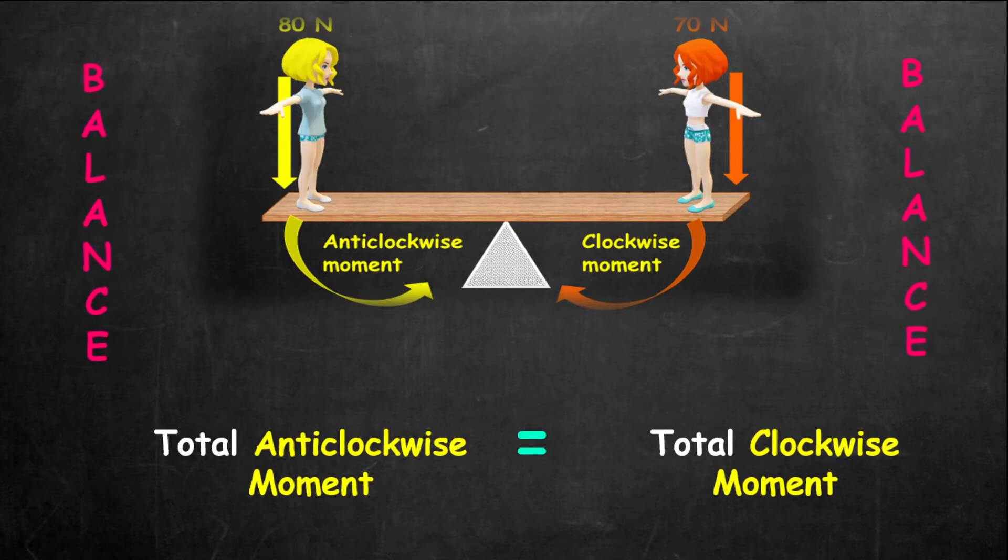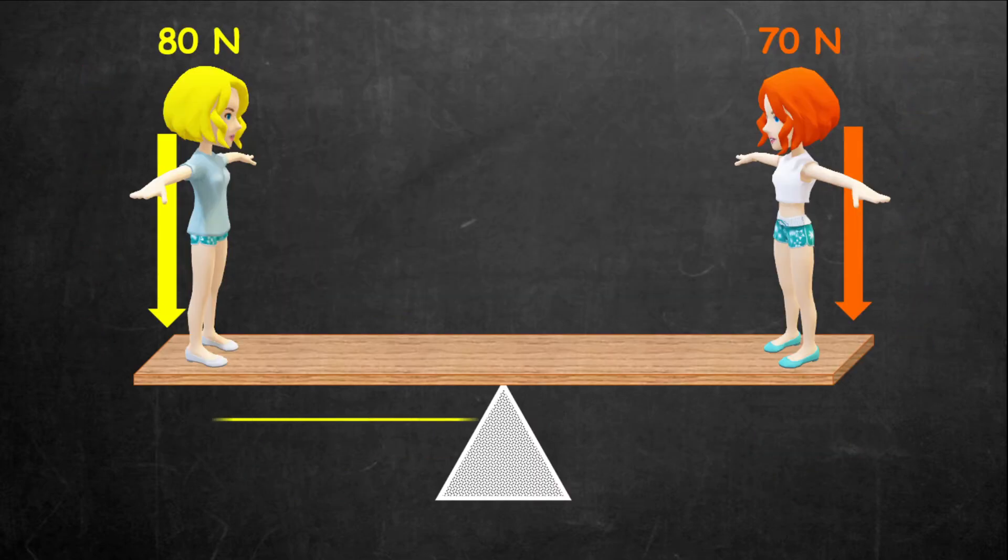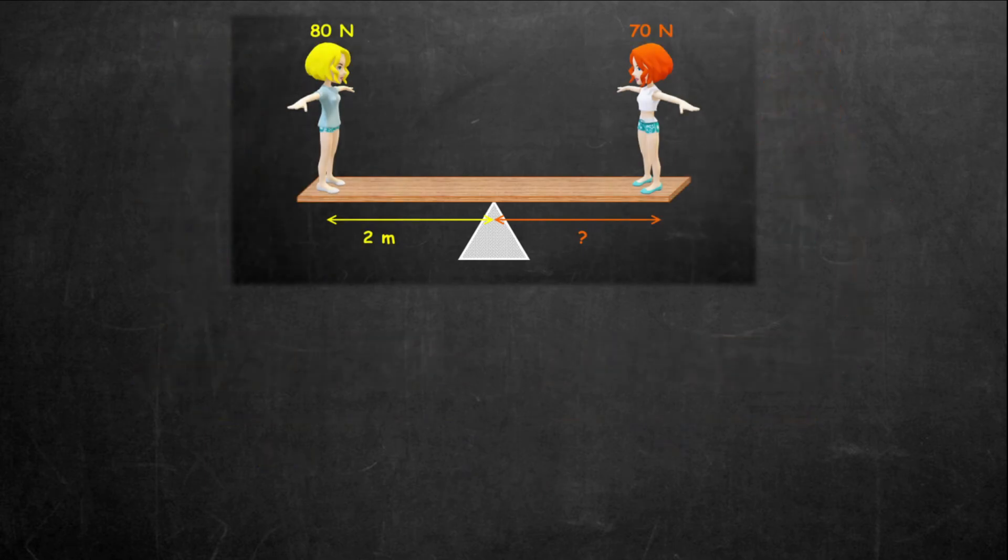Now, let's take Mary's distance from the pivot to be 2 meters, while Susie's distance is unknown. Now, we can find Susie's distance away from the pivot by applying the concept of moment, or the first principle of moment, which states that the total clockwise moment is equal to the total anti-clockwise moment.